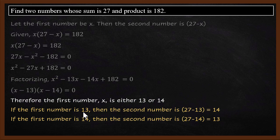If the first number is 13 then the second number is 27 minus 13 which is 14, because we know that the sum is 27.